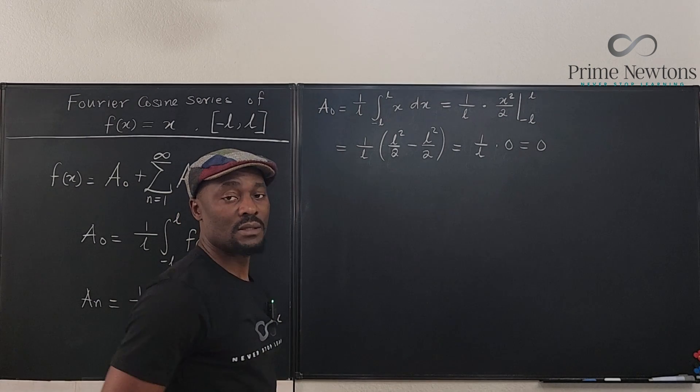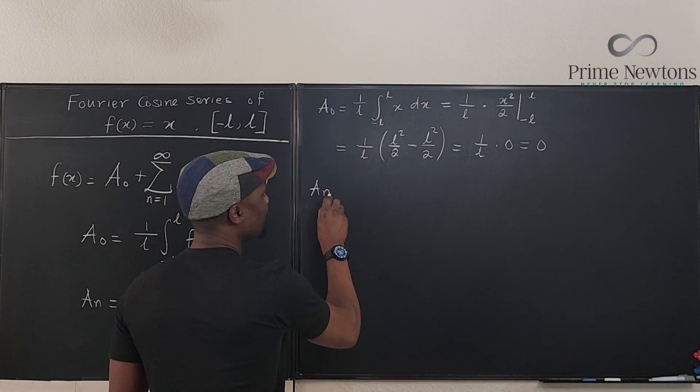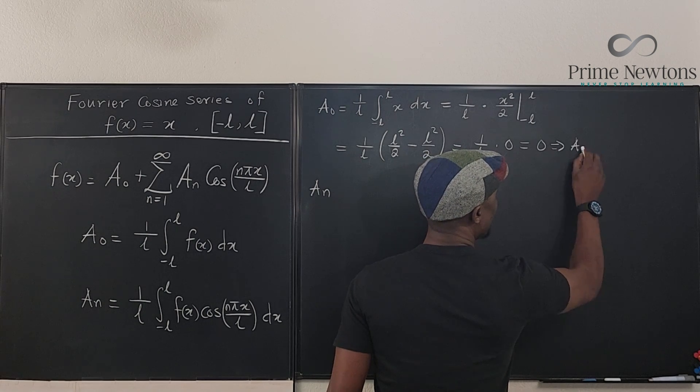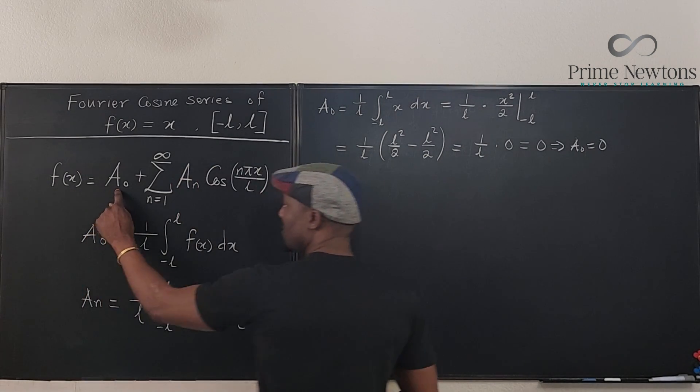So it means there is no a_0. Let's move on. What about a_n? So this implies a_0 equals zero. So if you go back here, it means this does not exist.